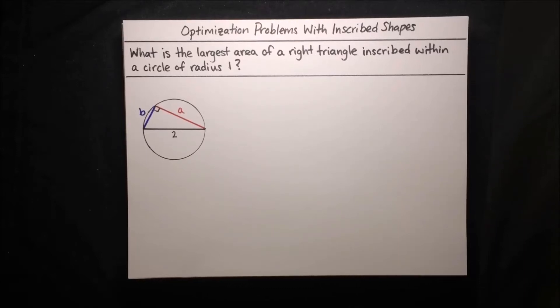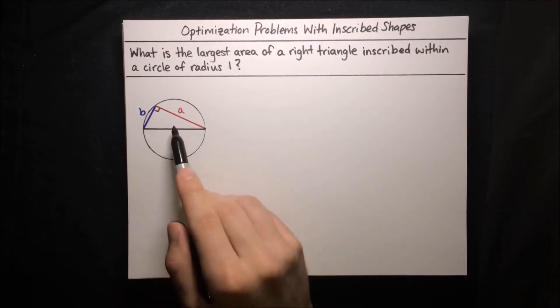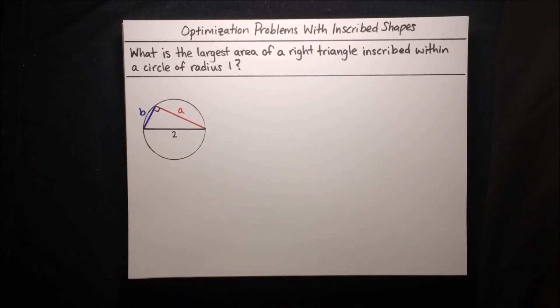In this video, I'm going to show you how to solve optimization problems with inscribed shapes. We want to find what is the largest area of a right triangle inscribed within a circle of radius 1. We've got a nice little diagram here to help us.